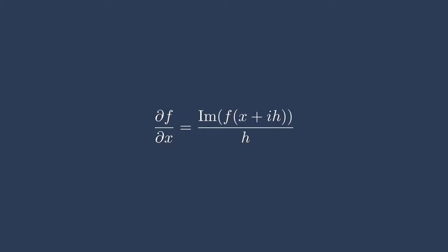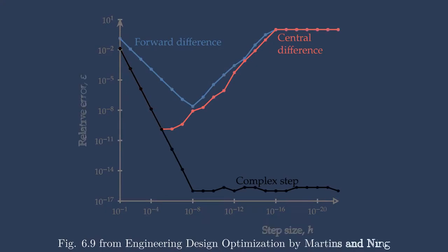This allows you to amazingly avoid any subtractive cancellation problems. You can use a very, very small complex step step size and get fantastic results in terms of accuracy. Let's take a look at a figure here. This is figure 6.9 from Engineering Design Optimization by Martins and Ning. I want to highlight here how complex step is operating and how it's operating better than either of the finite differencing options.